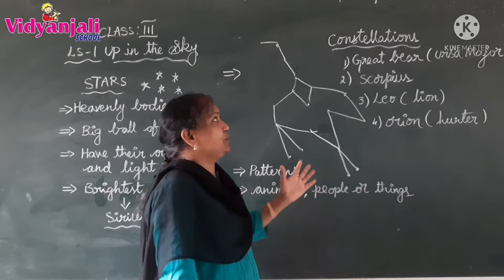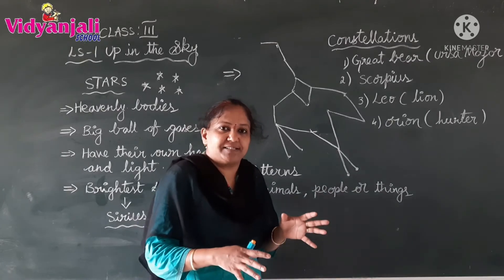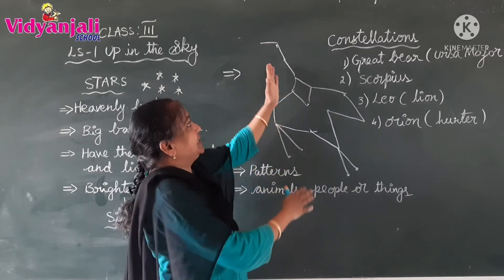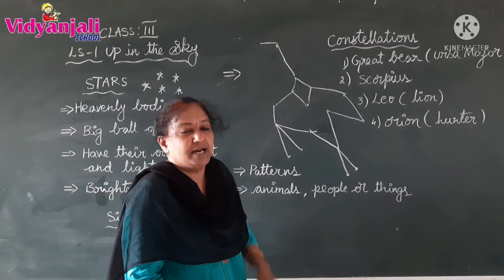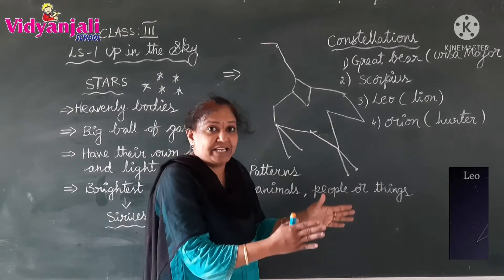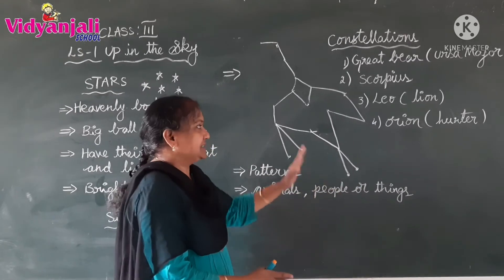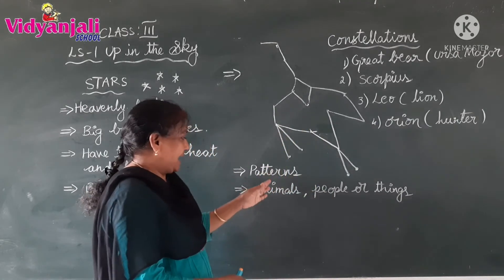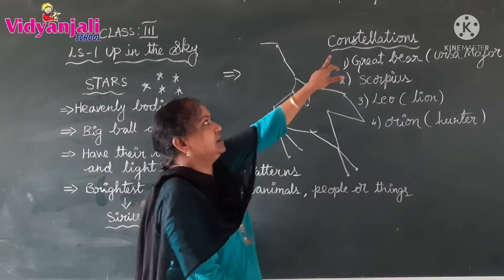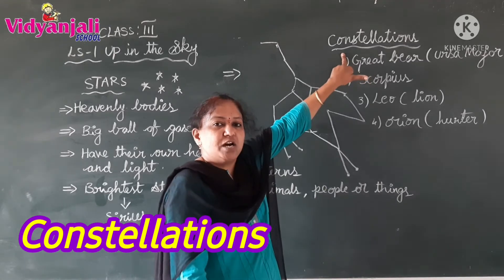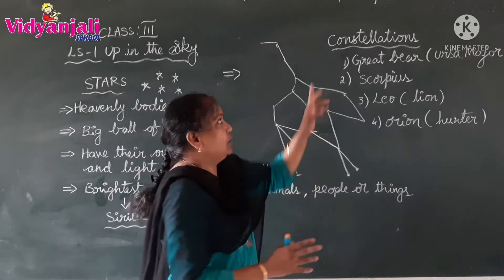Now coming to the next point. Sometimes stars are looking like patterns in the night sky. If you observe the night sky, sometimes it is looking like a bear — this is called the Great Bear, or Ursa Major. Sometimes they are looking like animals, people, or things. A group of stars forming such a pattern is called a constellation. These patterns we can see in the night sky are called constellations.